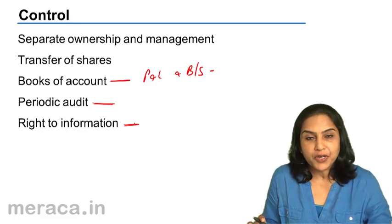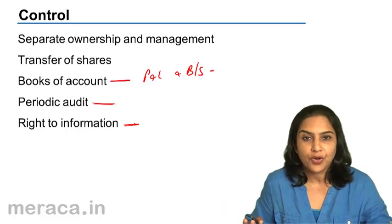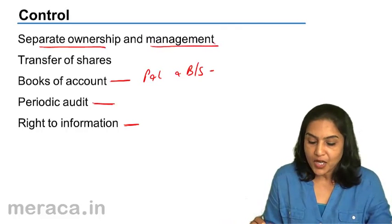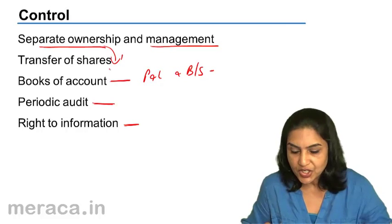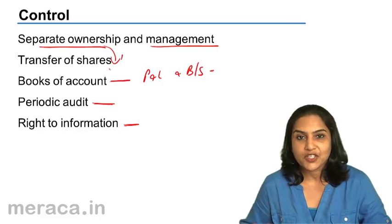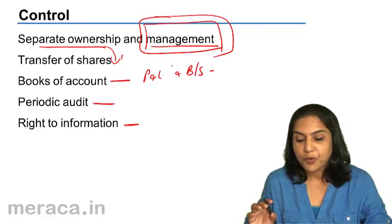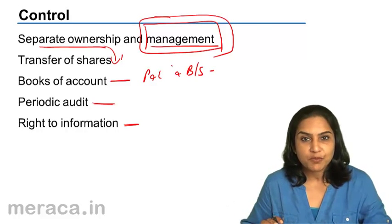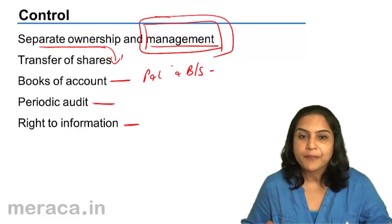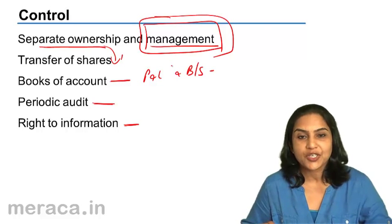This requirement of control is unlike in the case of a sole proprietorship, where the owner was also the manager and knew all about his business. In the case of a company, with separate ownership and separate management, and where the owners may constantly change, it is not possible for the owners to have total control. So management is separate. The board of directors appointed by the shareholders is responsible for the management of the company. Books of accounts have to be maintained, financial statements have to be prepared, periodic audit has to be made, and the shareholders have a right of access to information in a company.